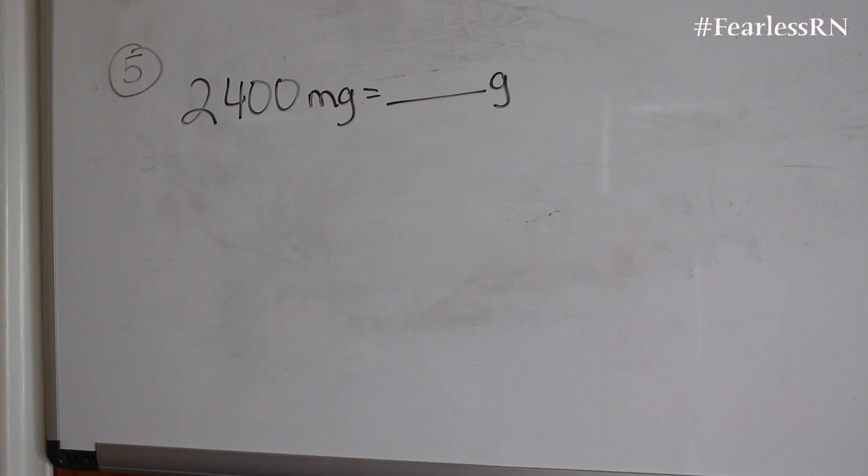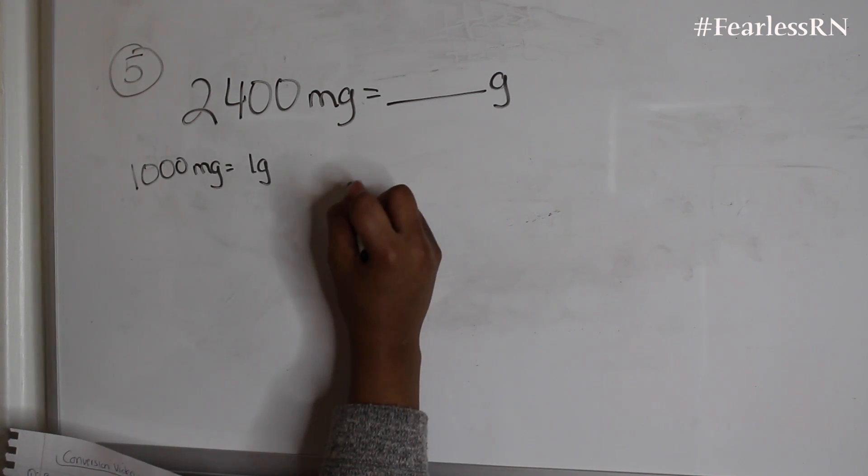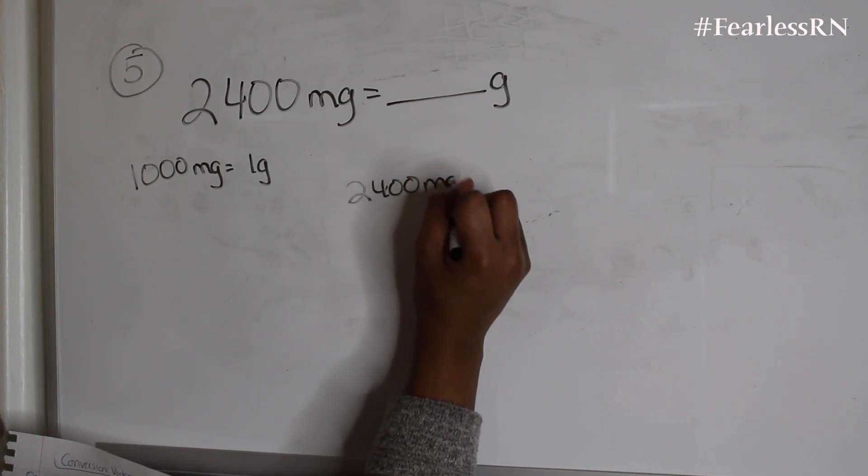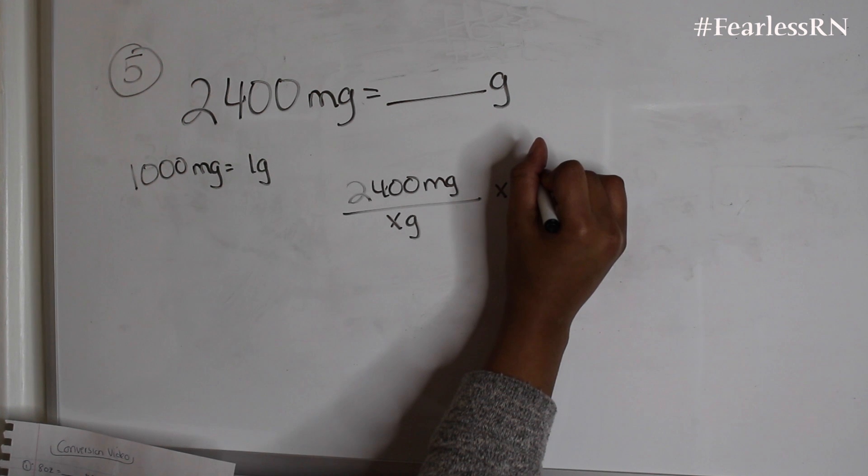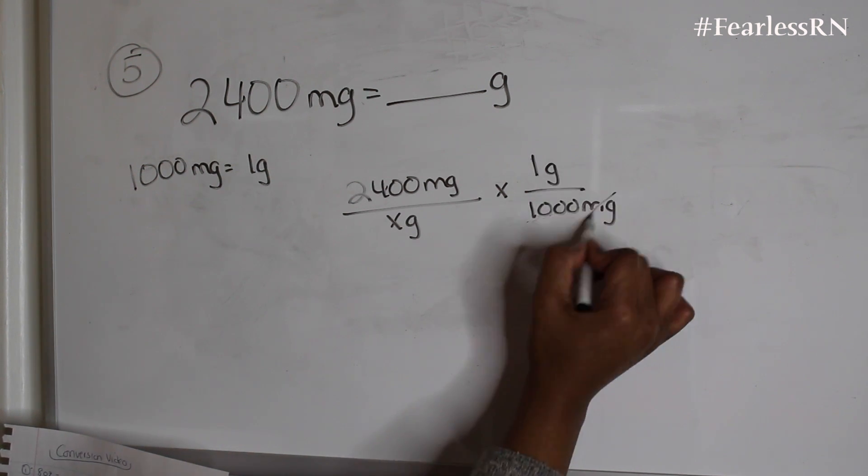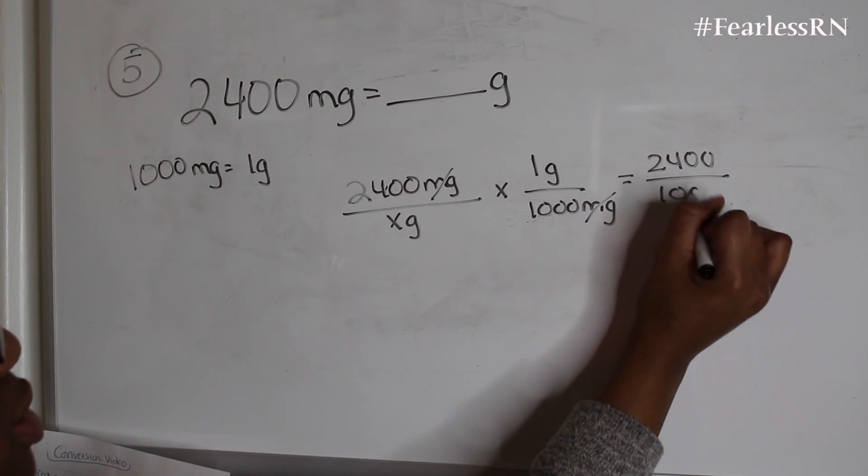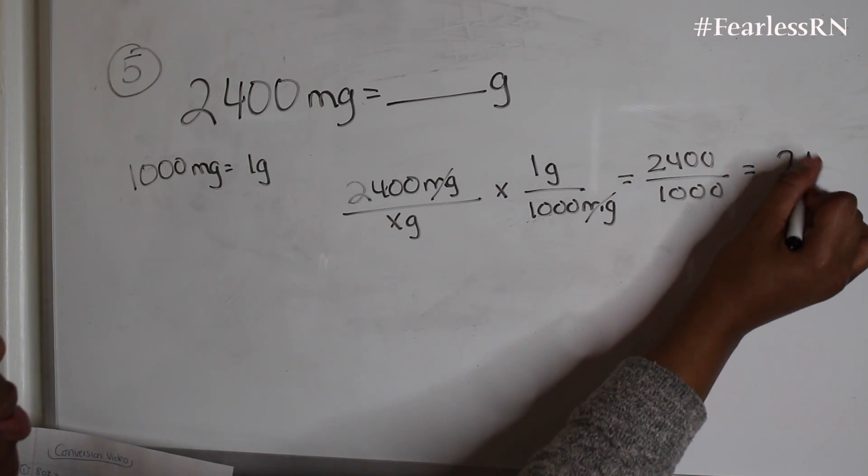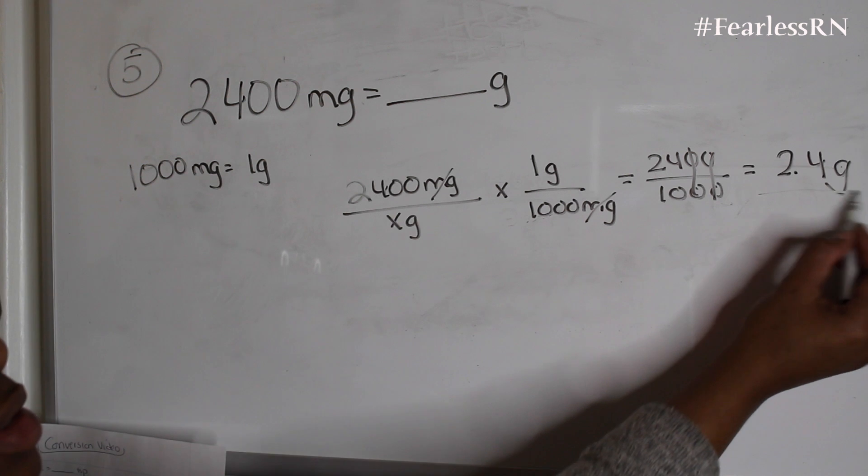2,400 milligrams equals how many grams? So we know that 1,000 milligrams equals 1 gram. So let's write down the conversion. And now let's set up our problem. So 2,400 milligrams over x grams. I'm going to put the conversion here: 1 gram over 1,000 milligrams. The goal is to get to grams. We're going to cross out milligrams. Multiply straight across. You get 2,400 over 1,000, and you'll be getting 2.4 grams because these two cancel out. When you divide, these two cancel out and you're left with 2.4 grams.